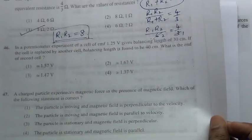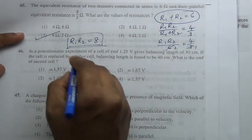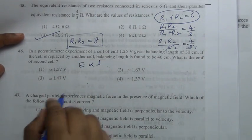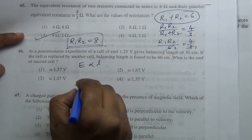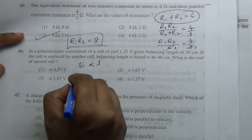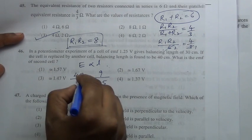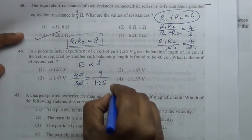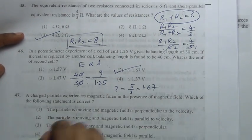In a potentiometer experiment, a cell of EMF 1.25 V gives a balancing length of 30 cm. EMF is proportional to balancing length: 1.25 V corresponds to 30 cm, and the unknown EMF corresponds to 40 cm. Therefore the unknown EMF = (40/30) × 1.25 = 5/3 ≈ 1.67 V.